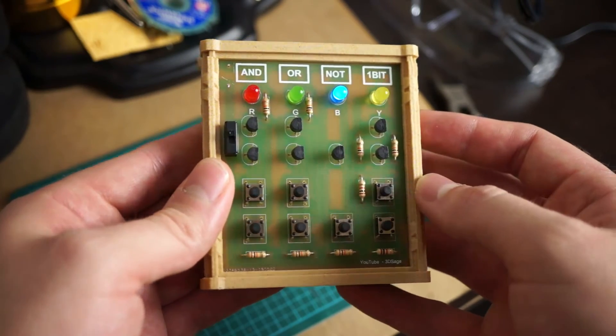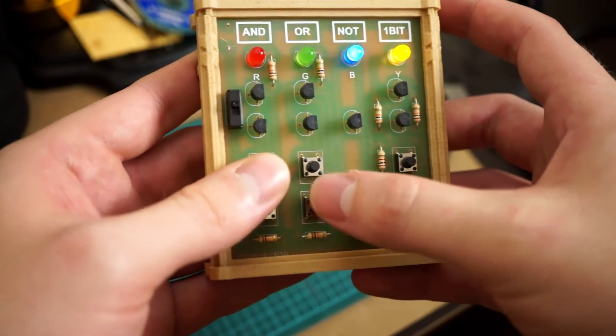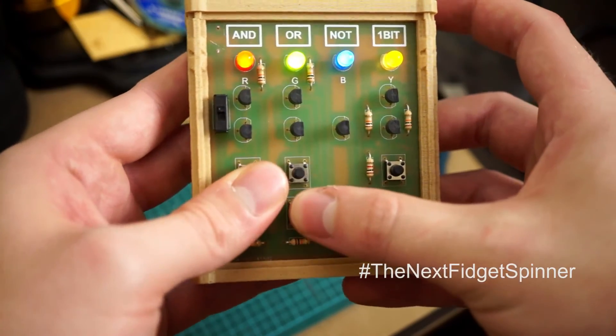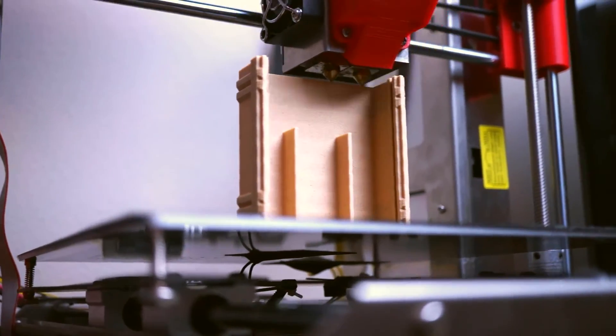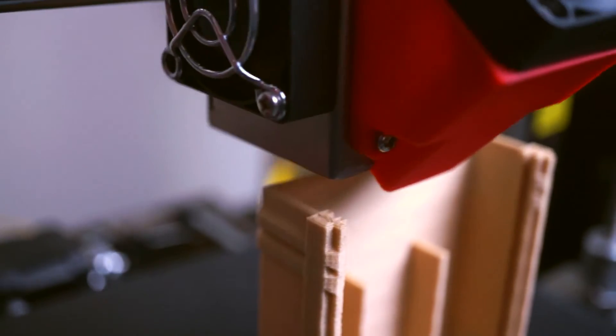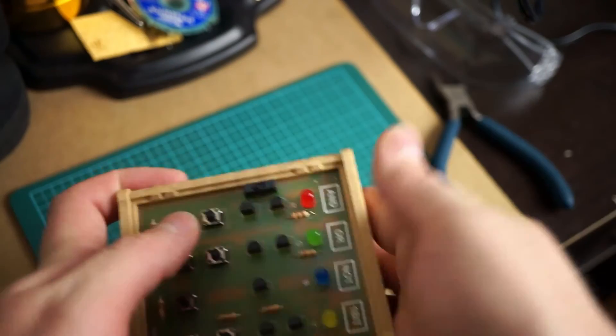It's wonderful in its simplicity, and actually quite addicting. Hashtag the next fidget spinner. I 3D printed the case out of filament made of real wood that can be sanded and even wood stained. This is a fun project, and I'm really happy with how this turned out.